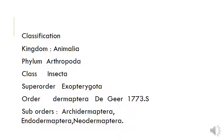Now comes the classification. Kingdom Animalia, Phylum Arthropoda, Class Insecta, Super Order Exopterygota, Order Dermaptera given by Gere in 1773. Sub-orders are Archidermaptera, Endodermaptera, and Neodermaptera.